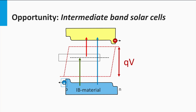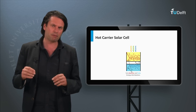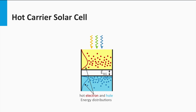The last concept we will discuss is the hot carrier solar cell, which basically improves the band gap energy utilization. Here we see the light-excited charge carriers in a semiconductor material. The population of the charge carrier levels reflects the situation just after excitation by absorption of a photon — this distribution is not in thermal equilibrium. The electrons are excited into a position higher in the conduction band, and the holes are excited down to a lower level in the valence band. Such charge carriers are called hot electrons and hot holes.